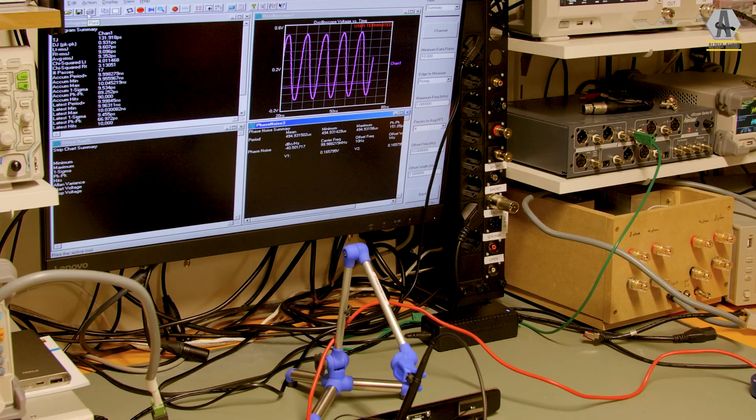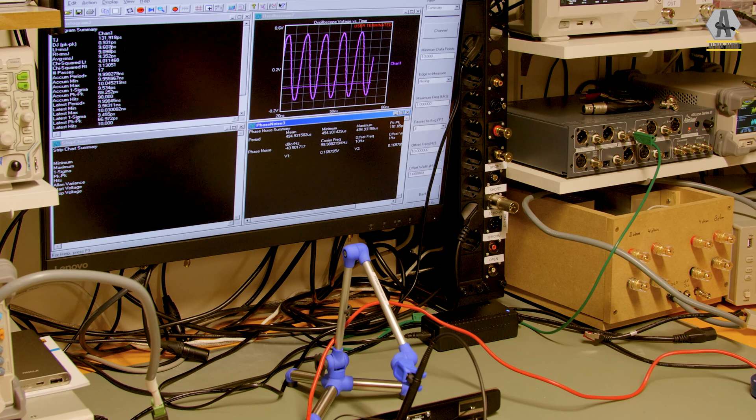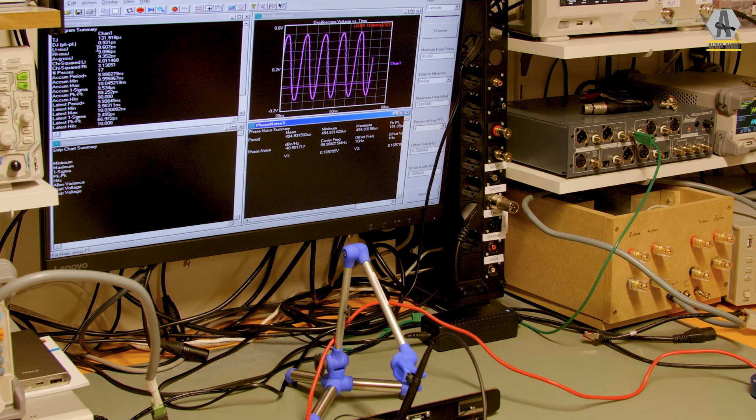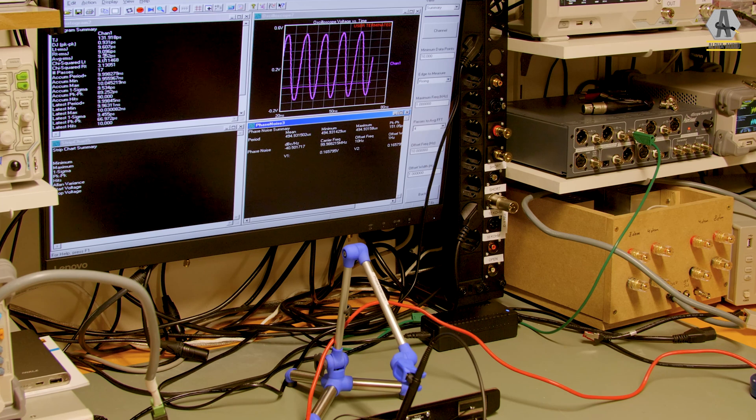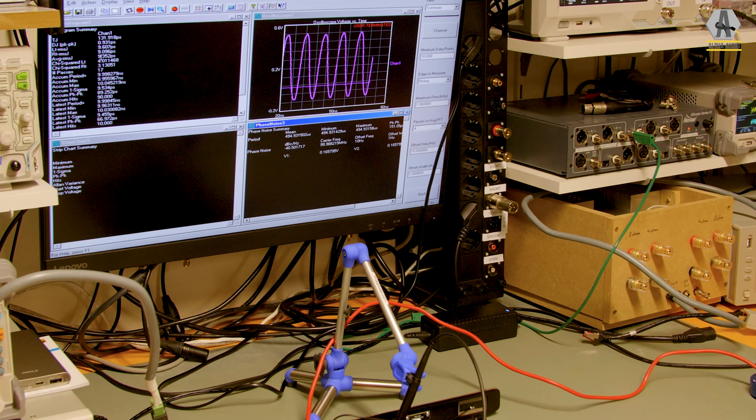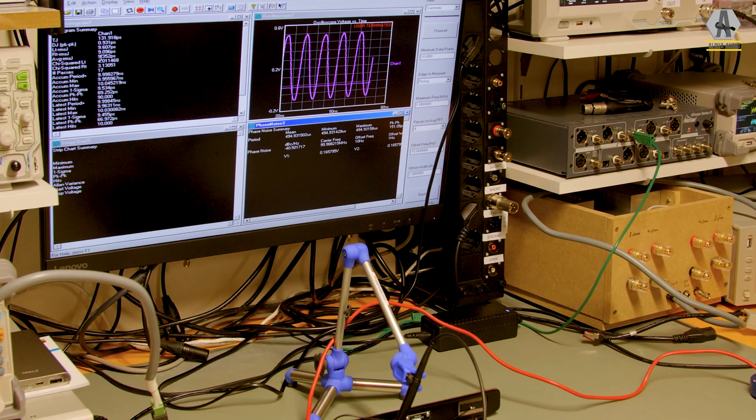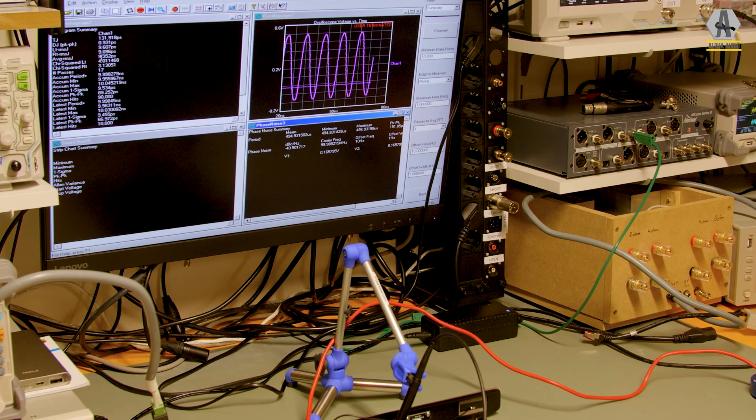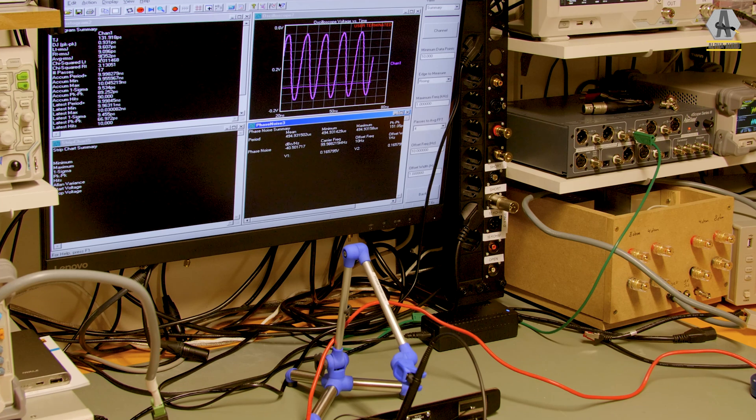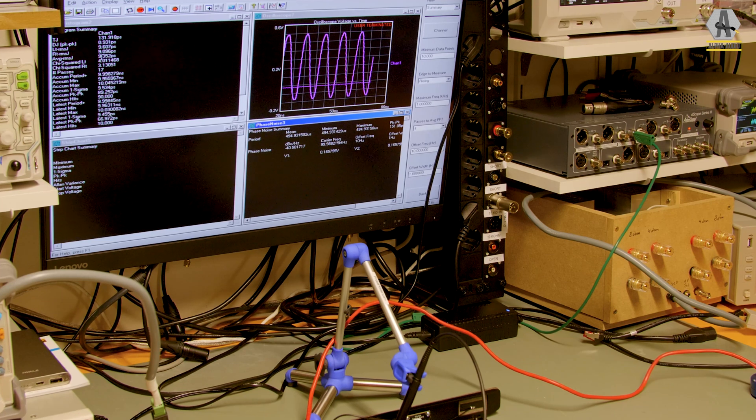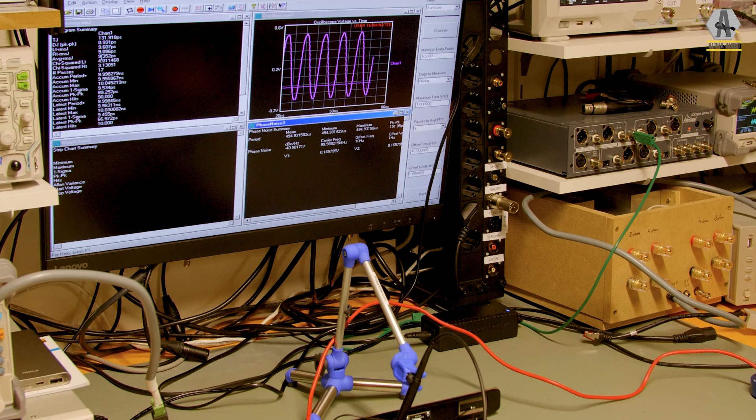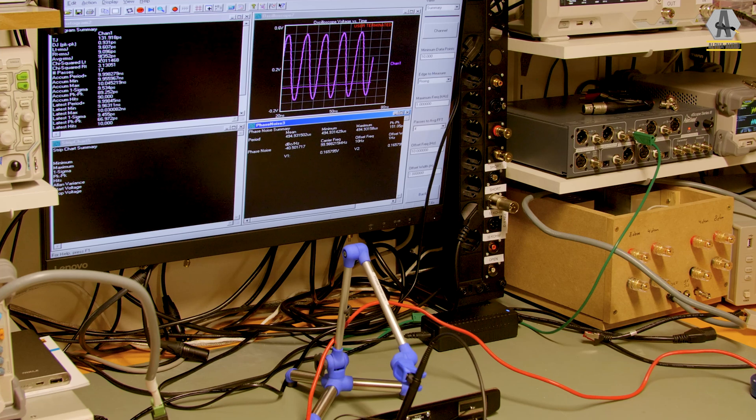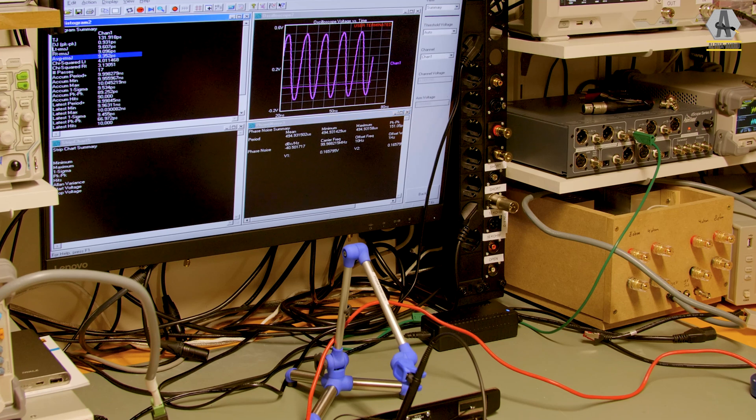This looks about right - 131 of total jitter and 9.3 average. Total jitter is an accumulation of all the jitter: bounded peak-to-peak jitter, unbounded or RMS jitter, periodic jitter, deterministic jitter, inter-symbol interference jitter - everything is combined in this.